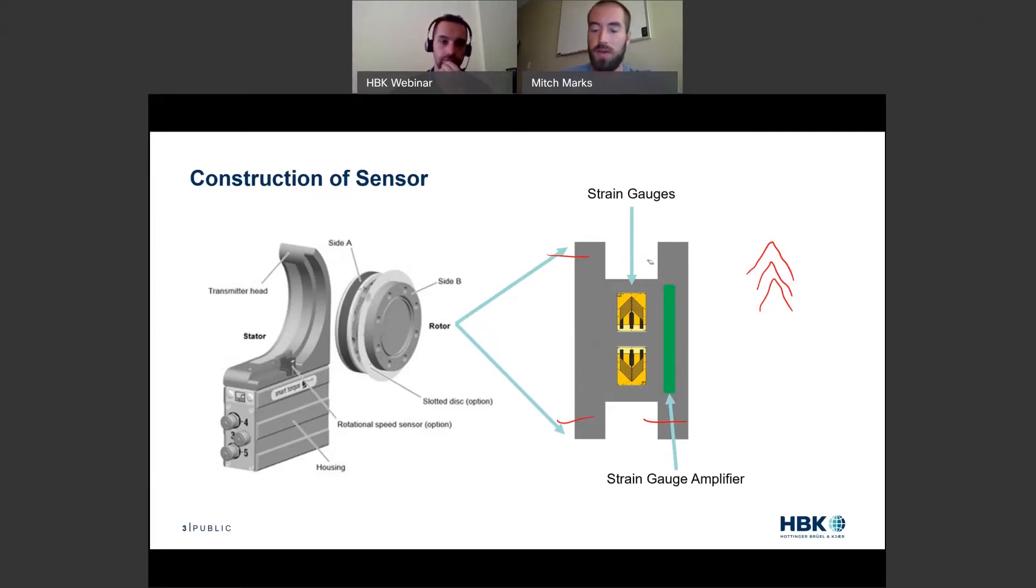Now anybody who's spent any time around strain gauges knows that it's not just the gauge that matters, it's not just the material it's on, but it's also the amplification, the excitation, and the compensation. We have a little circuit board indicated by this green here, where we are providing power to the gauges. We're compensating for things like rotational speed, temperature, linearity, and hysteresis effects of the metal.